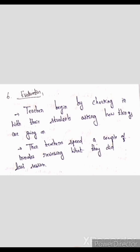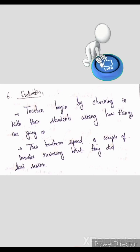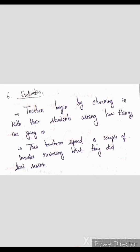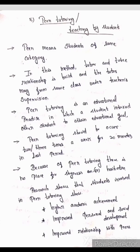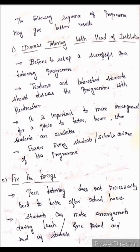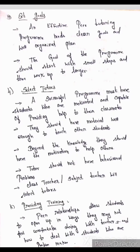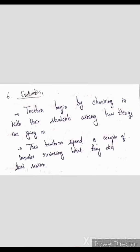The last step is evaluation. Evaluation begins by checking in with students and asking how things are going. Once the content is delivered and the peer tutoring seminar is done, teachers need to check and review what was done in the last session. So the sequence is: discuss, fix time, set goals, select tutors, provide training, and finally evaluation.